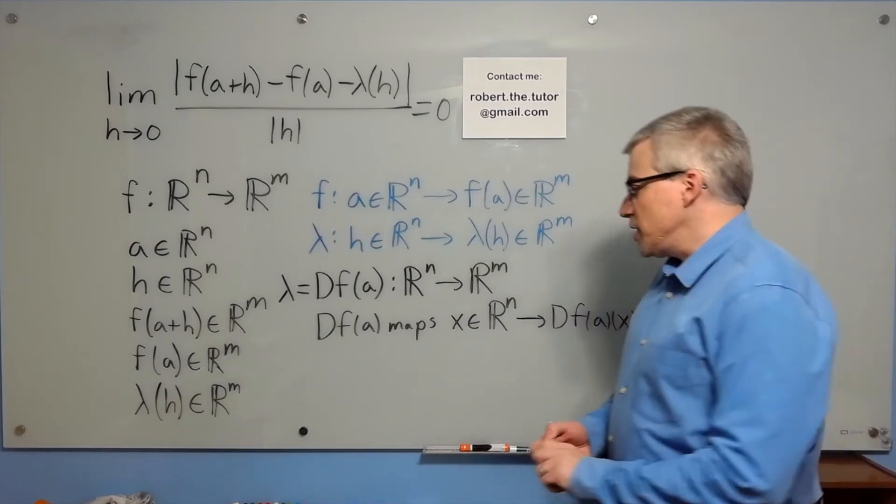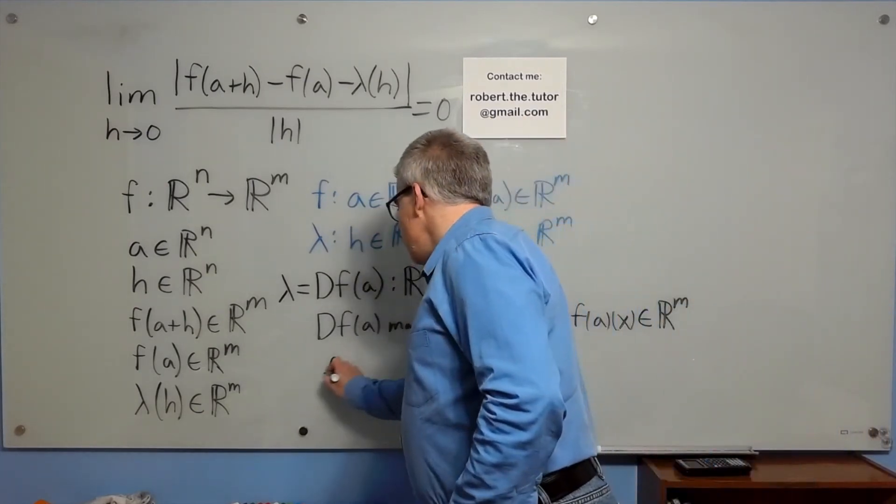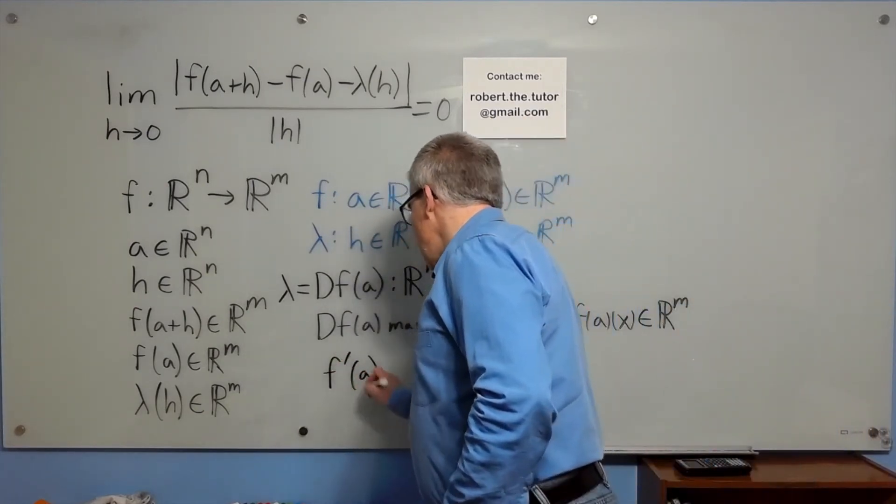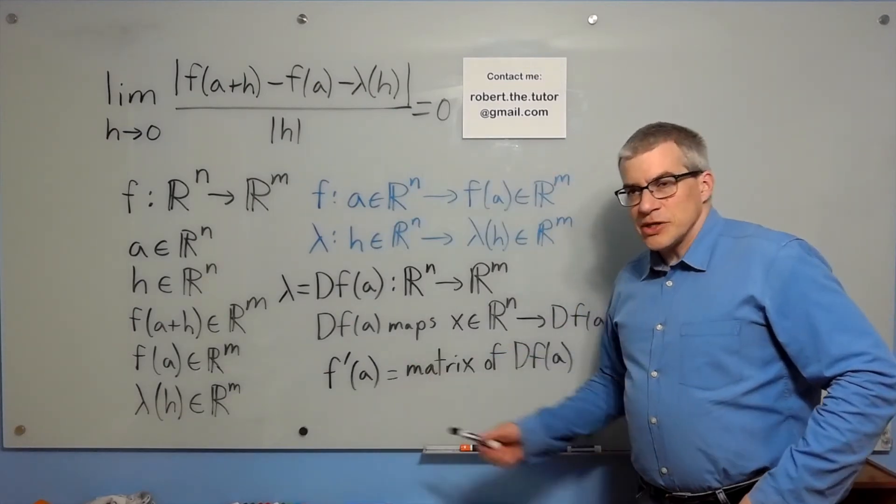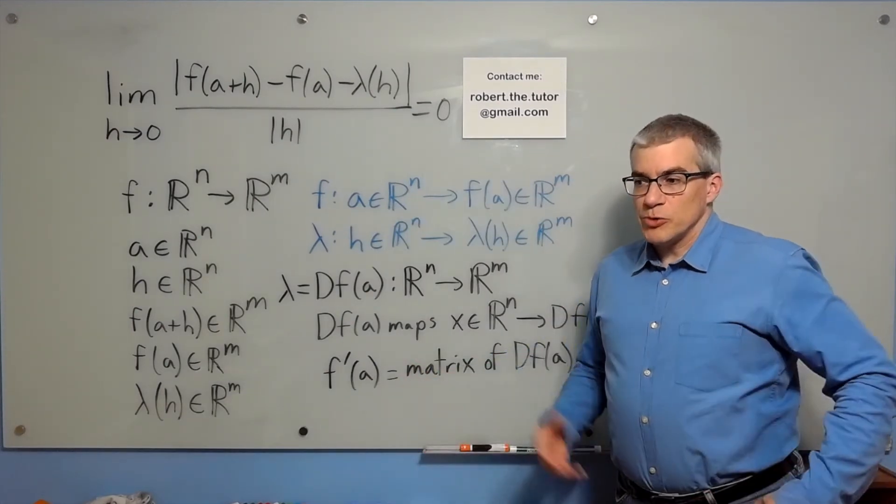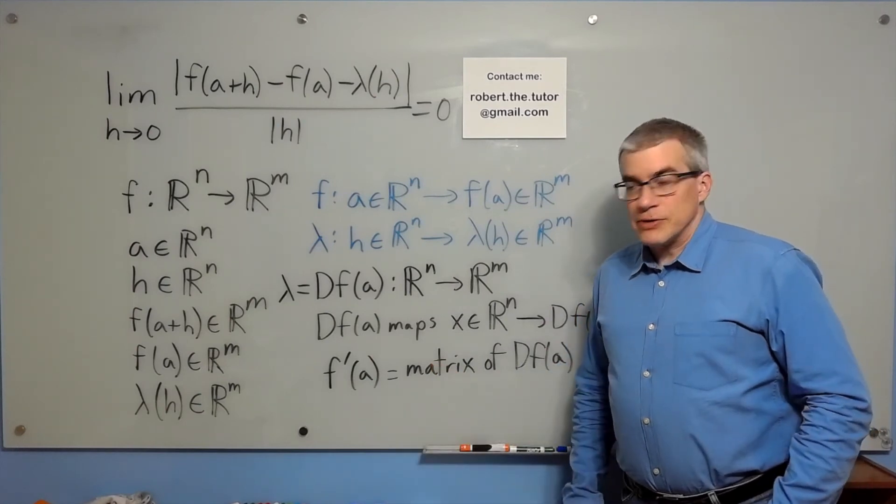If you write an actual matrix, Spivak writes the matrix as f prime of a. So this is essentially the grid of partial derivatives that one would learn in a regular vector calculus class.